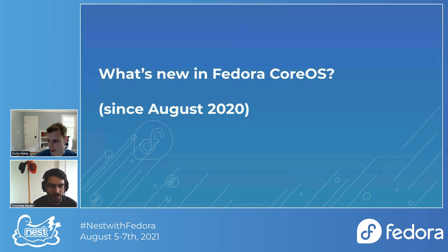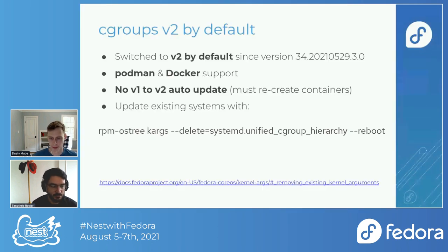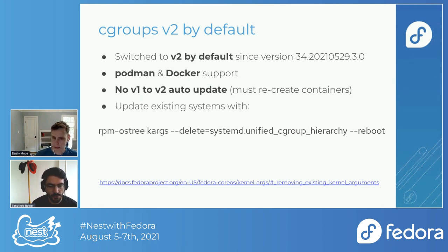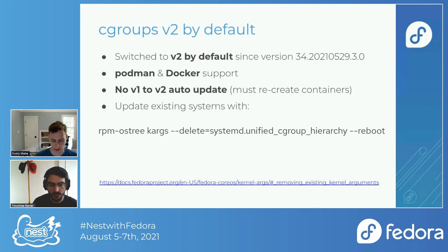Now I'll talk about what happened in Fedora CoreOS since approximately August 2020, about a year ago. One of the first big changes is that we finally moved to Cgroup v2 by default. All new nodes starting from this version will be running Cgroups v2 by default. We were able to make that switch with the Fedora 34 release because we now have full support in both Podman and Docker. The main thing to remember is we cannot auto-update nodes from v1 to v2 because you need to recreate your containers.